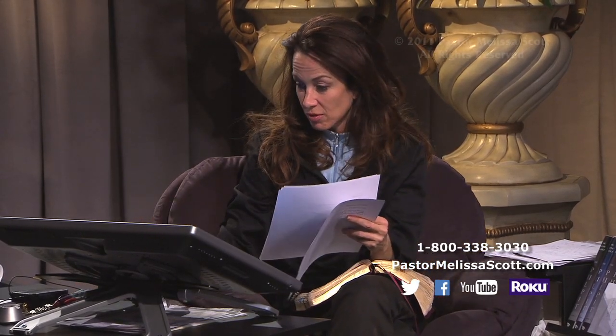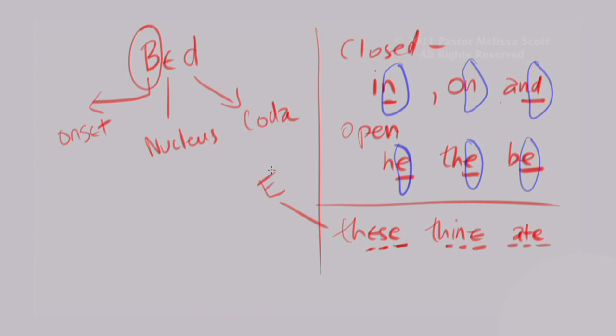The third English syllable type is the silent-e syllable. These are words that end with an e, have one consonant before that e, and one vowel before that consonant — for example, 'these' or 'thine': vowel, consonant, vowel. Or the word 'ate' — a-t-e: vowel, consonant, vowel. That is called the e-class syllable.